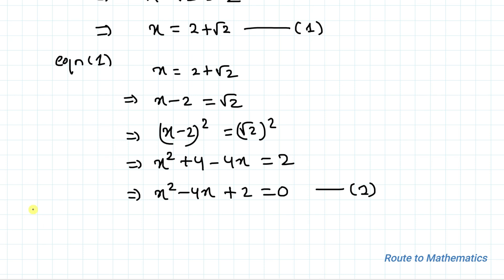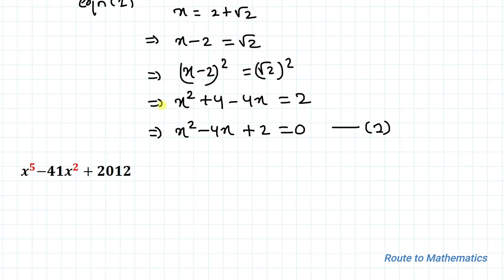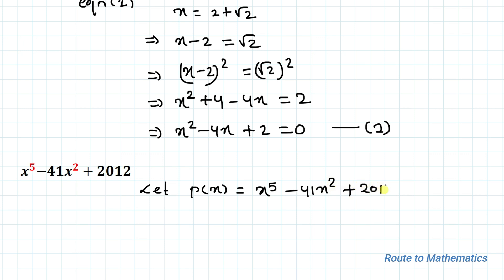So what are we asked to find? We are asked to find the value of x⁵ - 41x² + 2012. Let's take p(x) = x⁵ - 41x² + 2012, and we'll take t(x) = x² - 4x + 2.